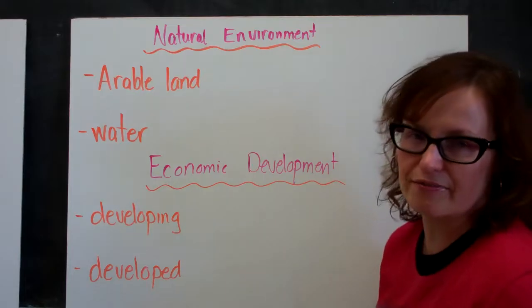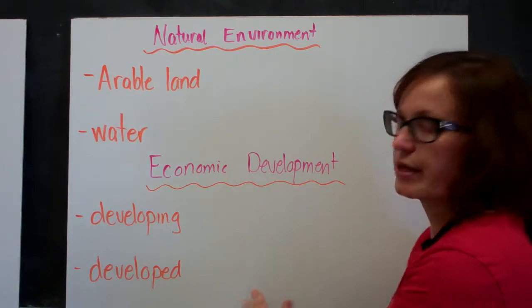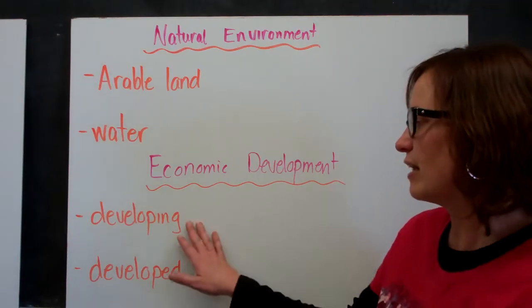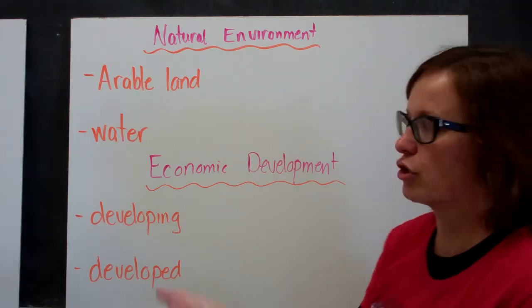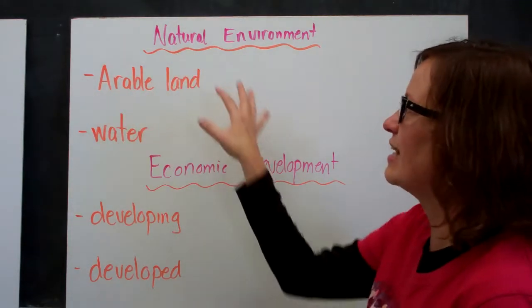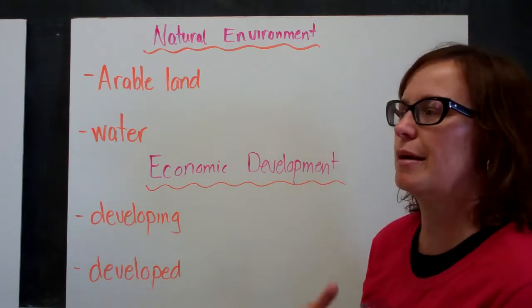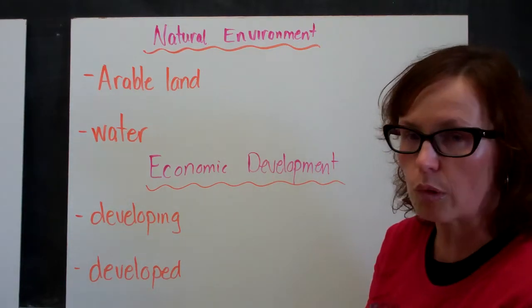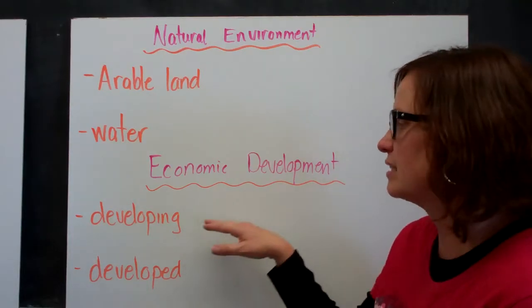The other is economic development. We often hear terms like a developing country or a developed country. A developing country has more people working in agriculture. They're still using the natural environment to meet their basic needs. There's a lot of farming, there might be mining, they might be cutting down forests for lumber. So there's a lot of agriculture going on. That's a developing country.